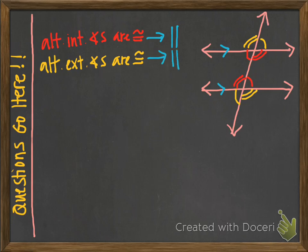Now, what about our corresponding angles? If corresponding angles — like this angle and this angle — are congruent, we've got parallel lines. Or another pair: if this angle and this angle are congruent, we've got parallel lines.